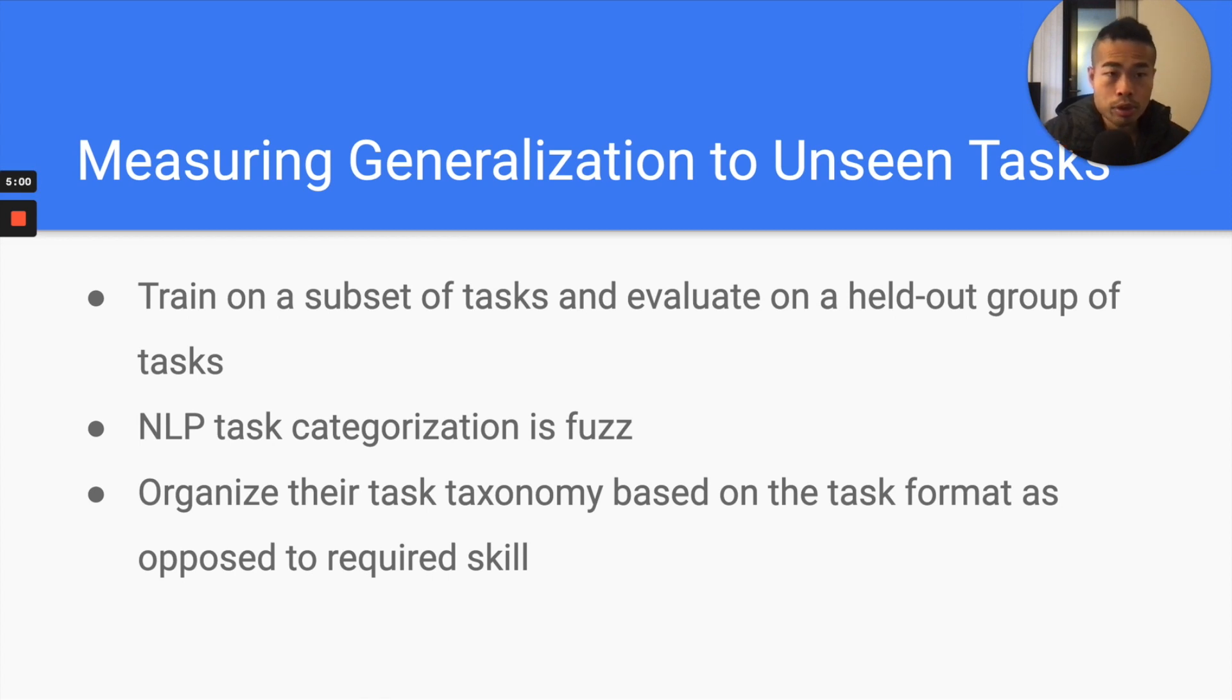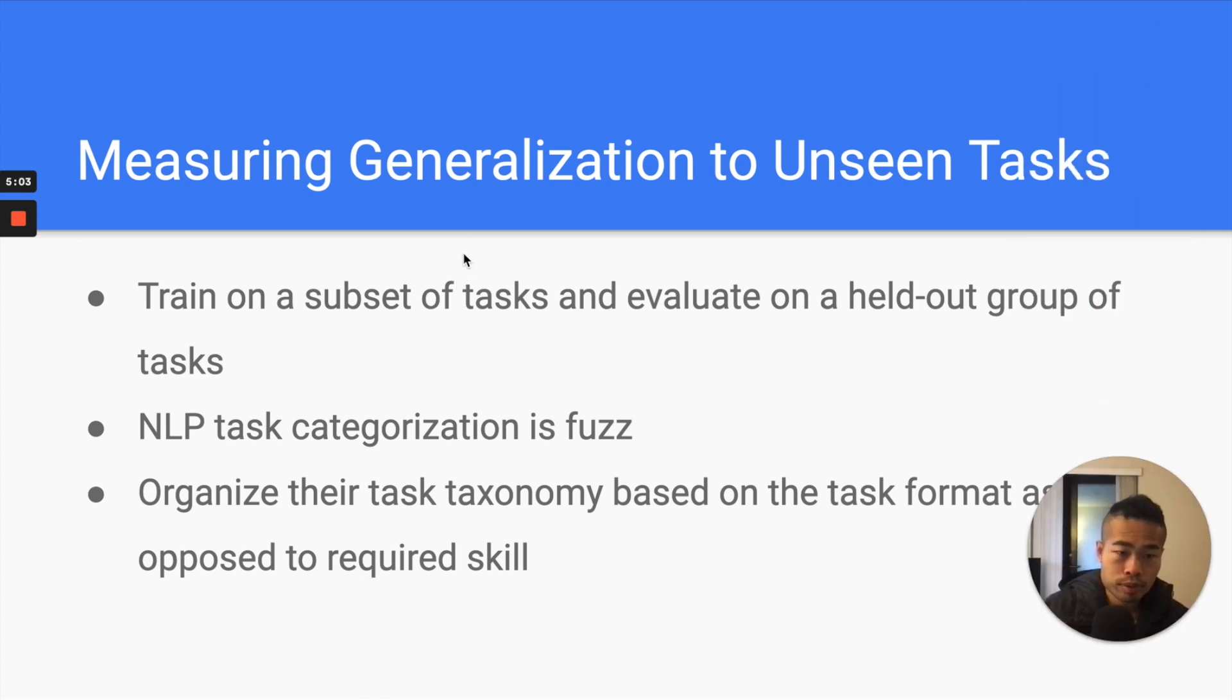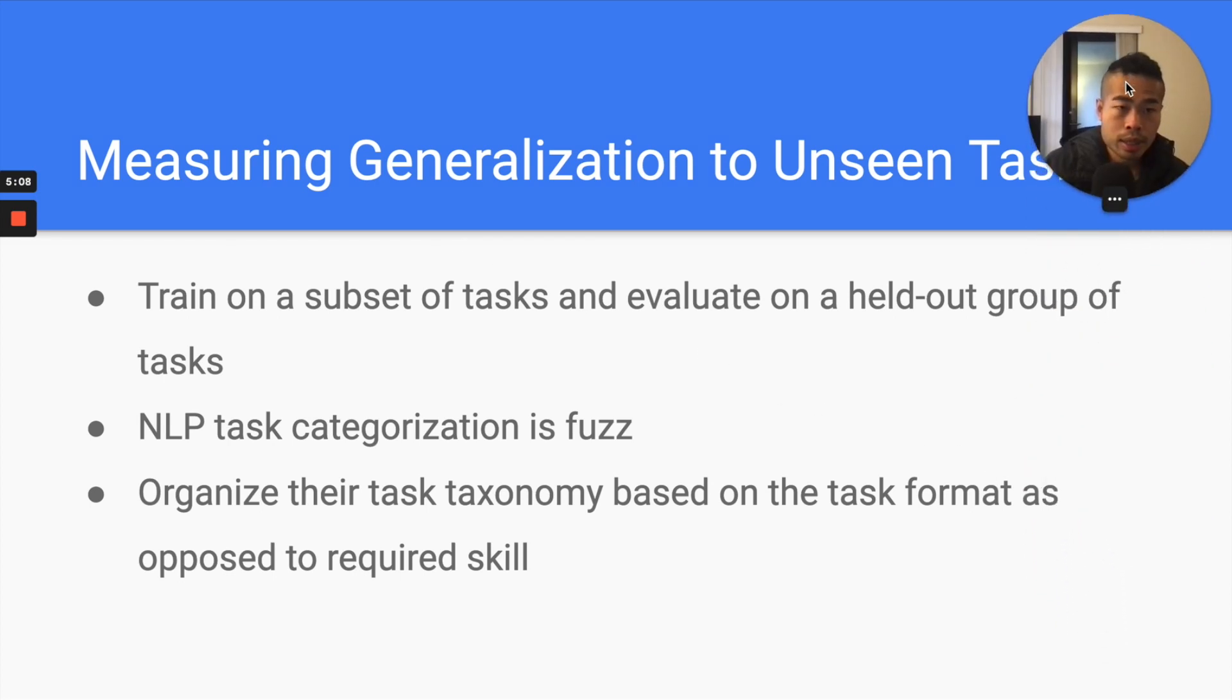Core principle for this paper is they want to see if model can do certain tasks if they never seen before during training time. To verify that, they will need to have some subset of tasks for training and some subset of tasks for evaluation. And the tasks that's for evaluation, they cannot be seen during the training time. So they need to separate that. It's like you have training tasks, test tasks, and they found out one problem is NLP task classification is fuzzy.